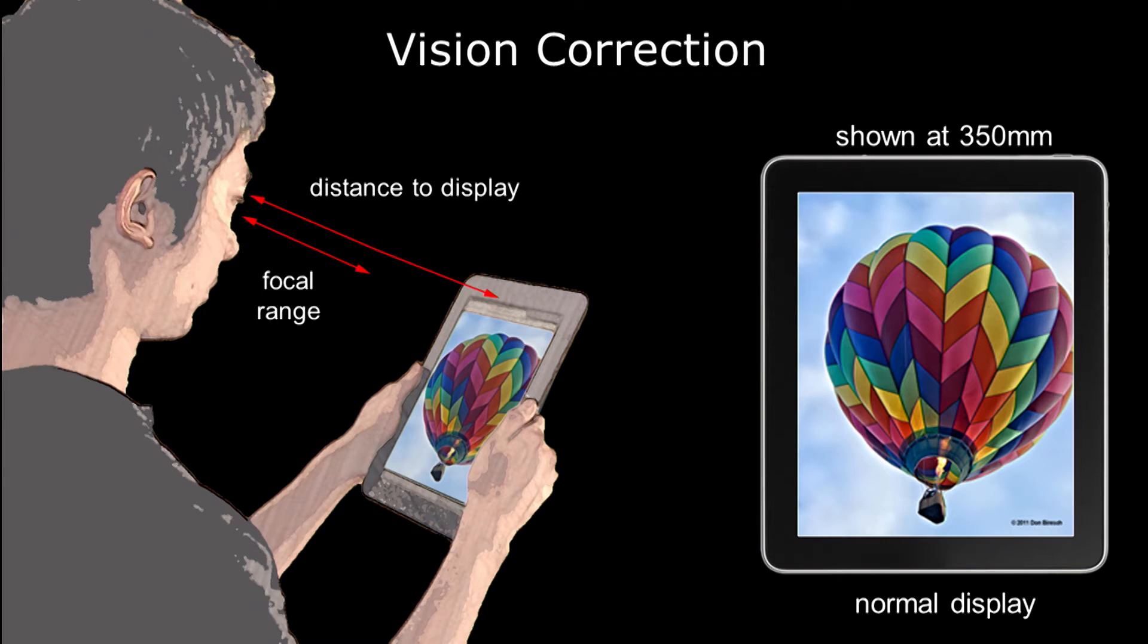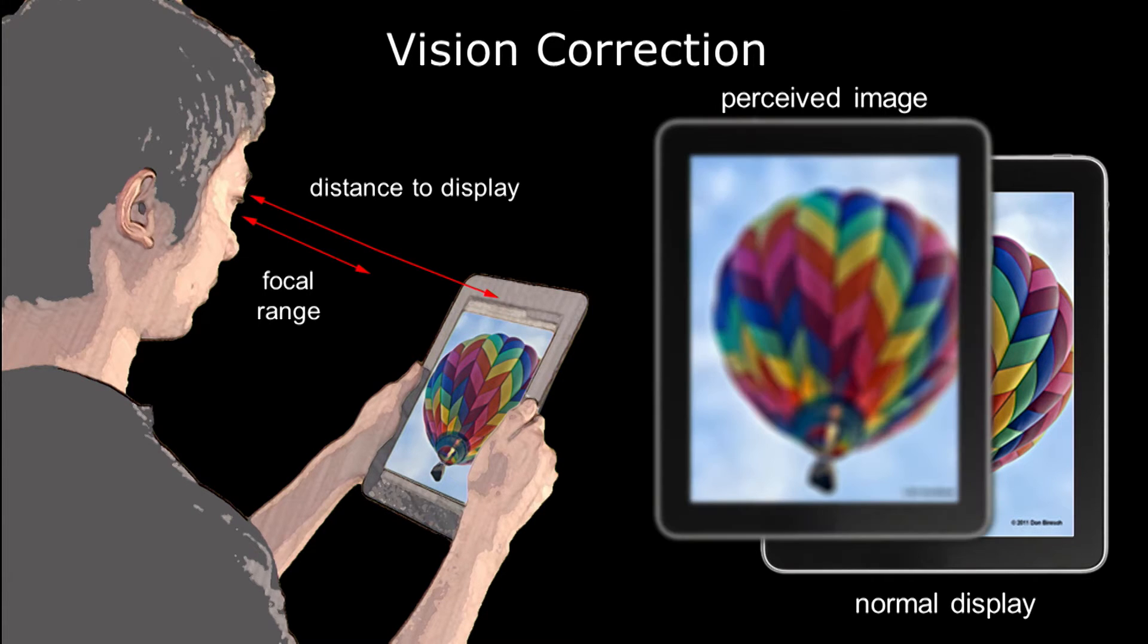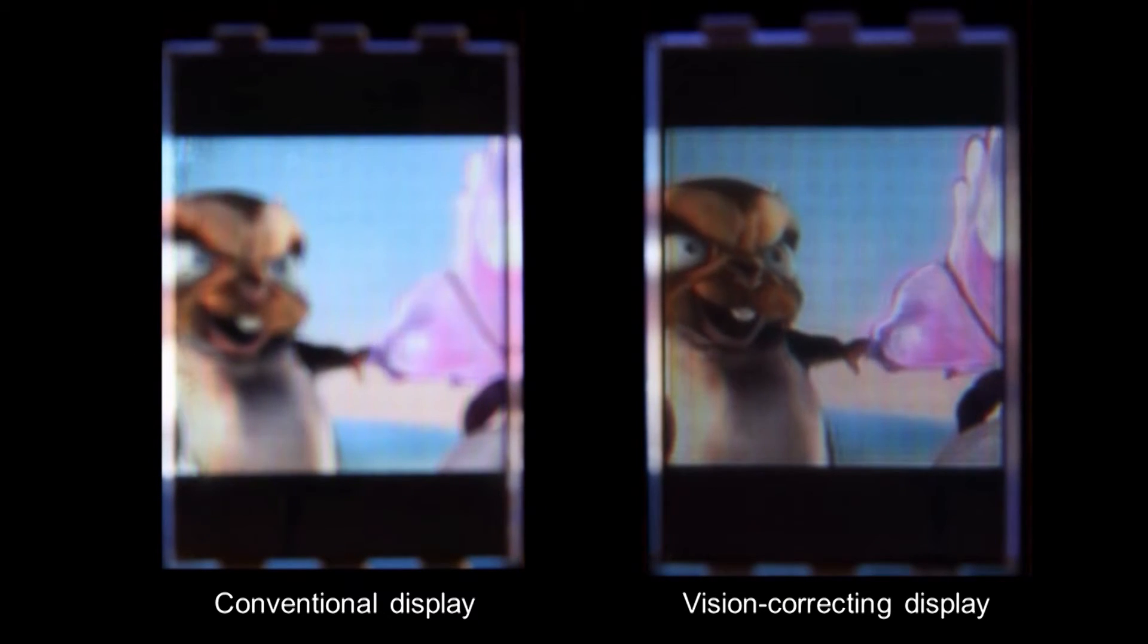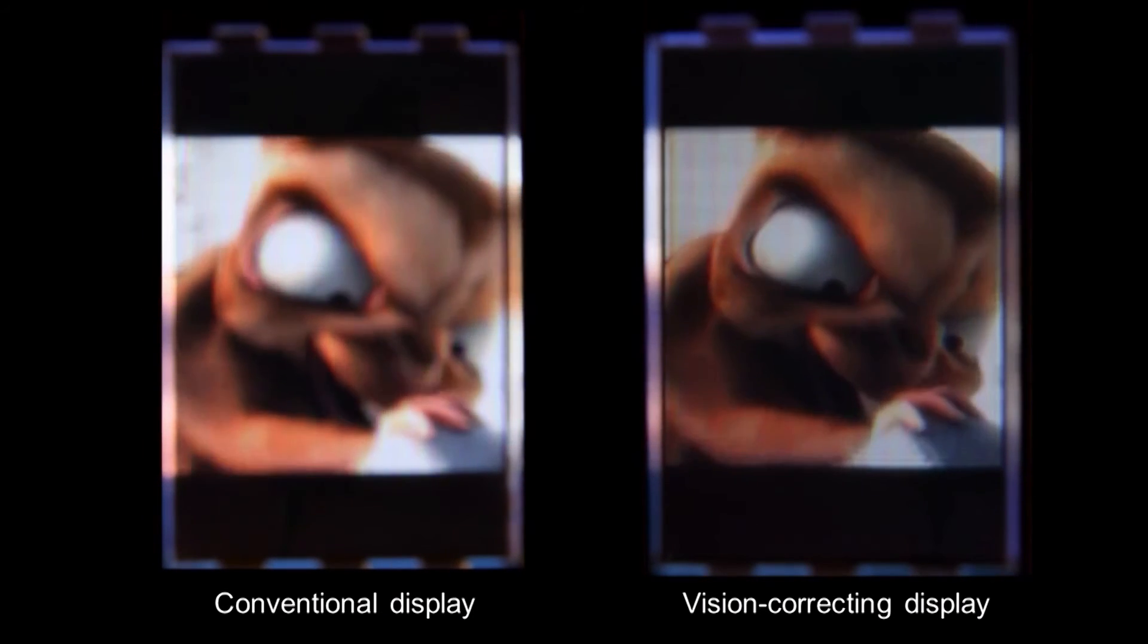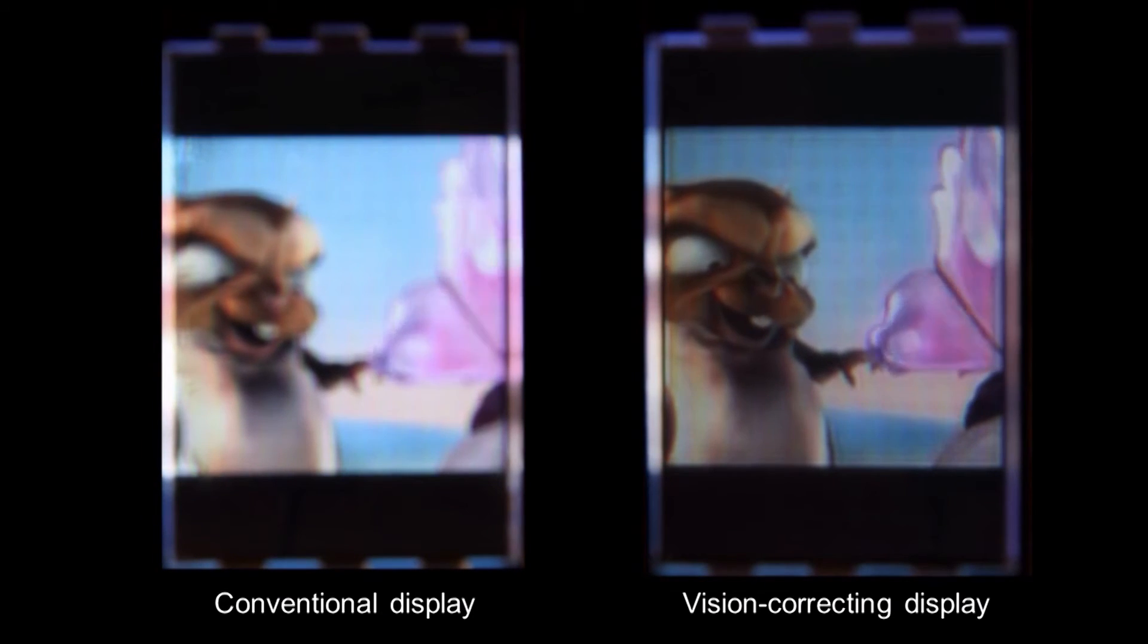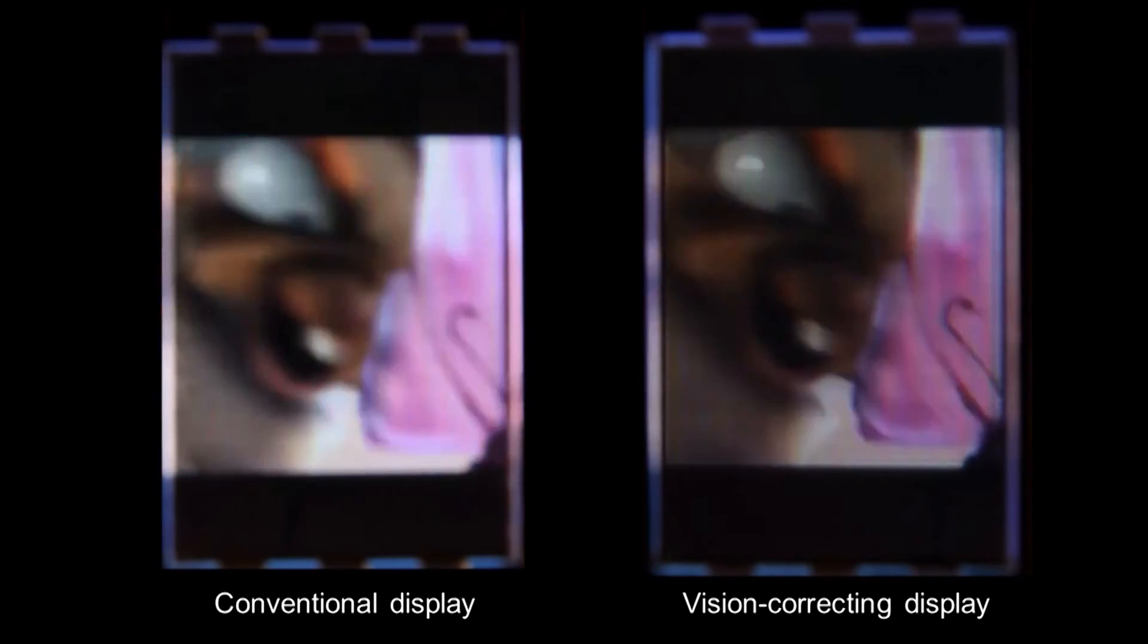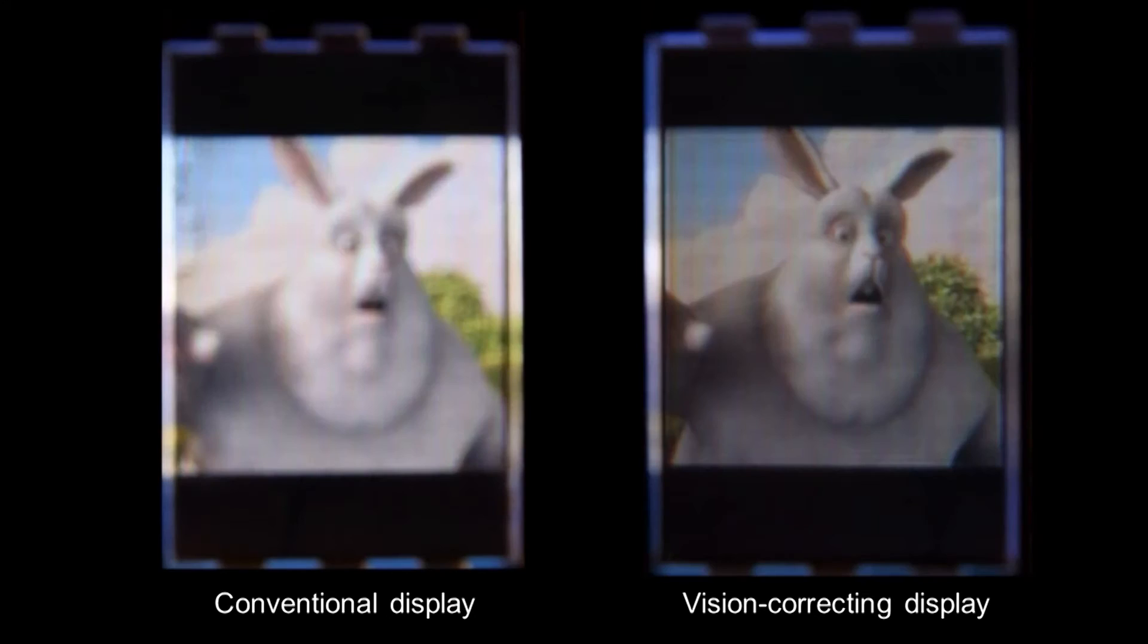So the first application is vision correction. Imagine you are nearsighted and when the display is shown outside your focal range, everything appears blurred. In this work, we build a vision correcting display so that the observer doesn't need to wear eyeglasses. We do all the correction on the display side so the observer can see the face of the bunny or the background tree in sharp focus as opposed to without any correction.